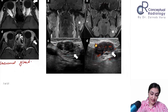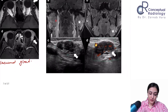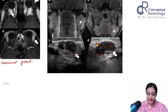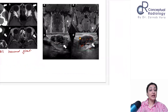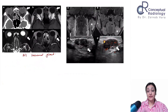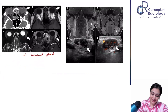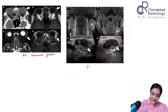Next case: salivary gland involvement. You can see bilateral parotid enlargement and bilateral submandibular enlargement. Ultrasound shows hypoechoic enlargement with Doppler uptake. This is bilateral sialadenitis.